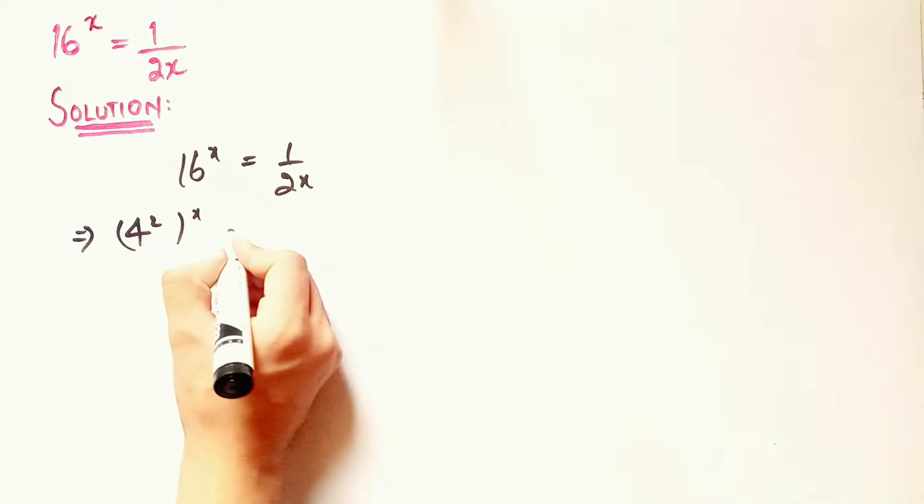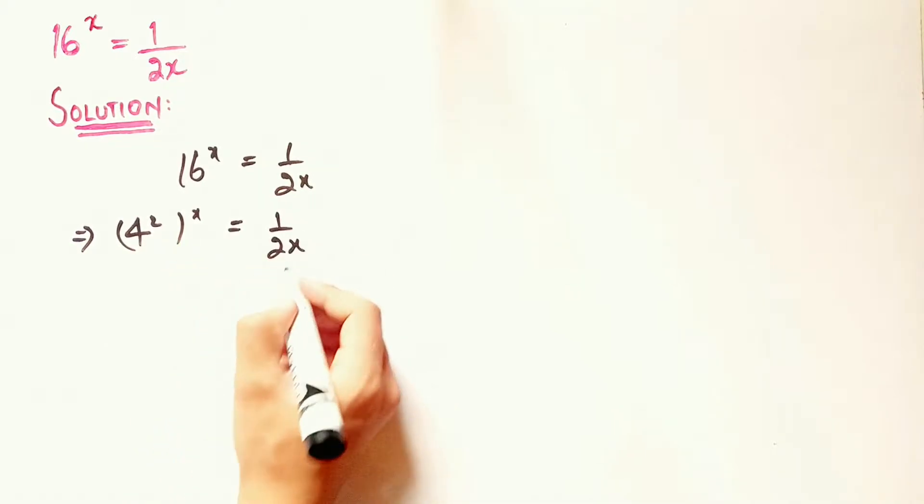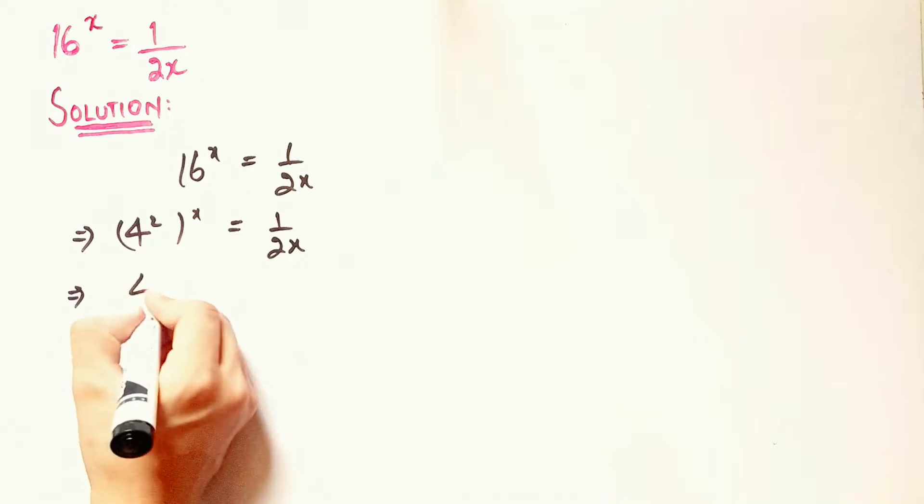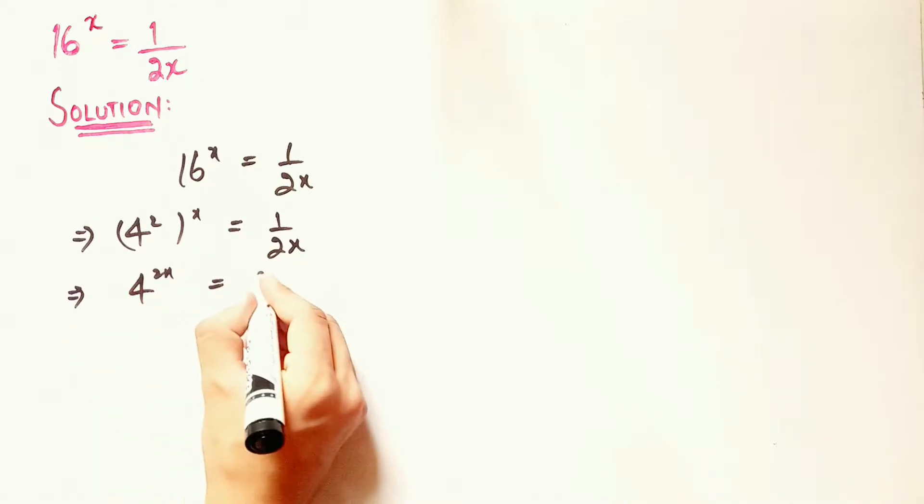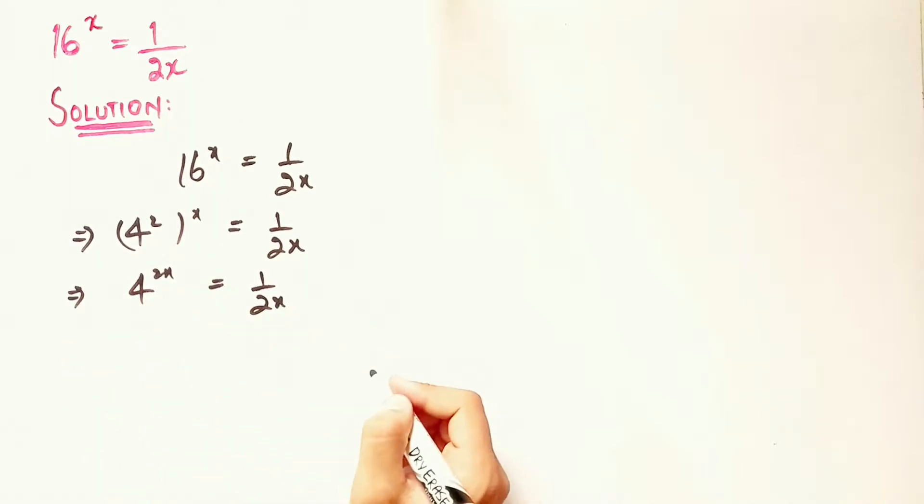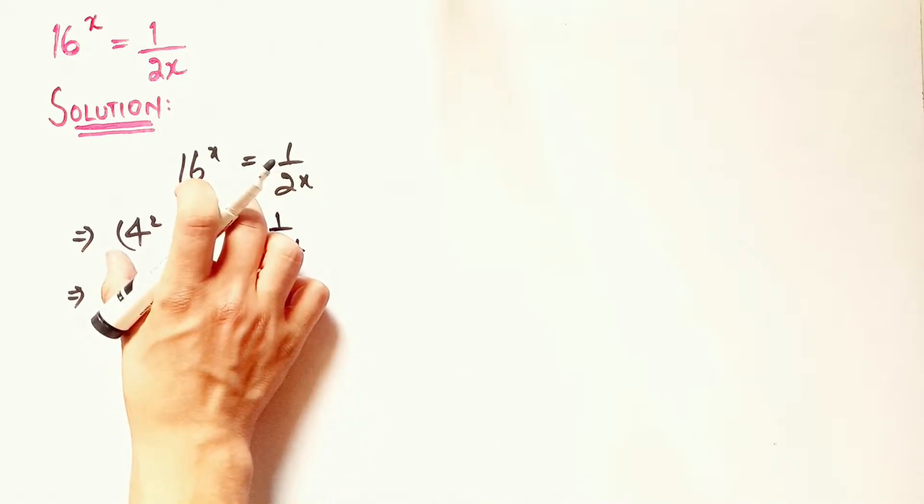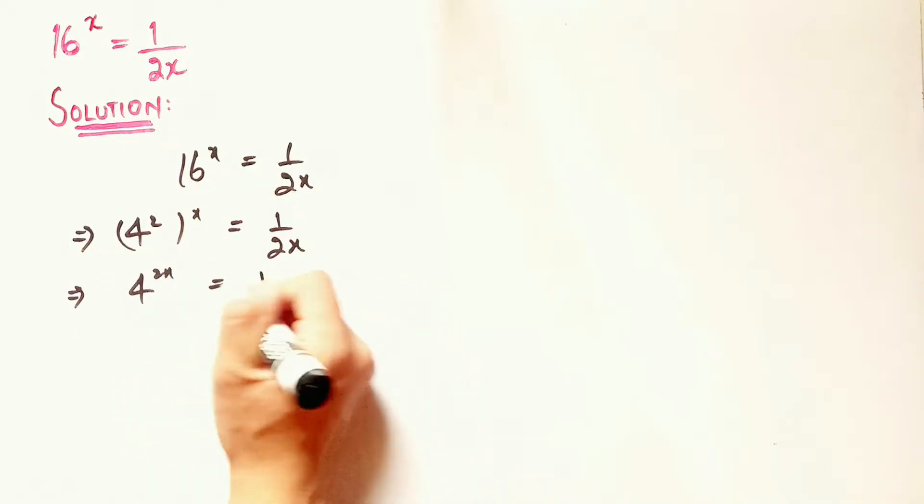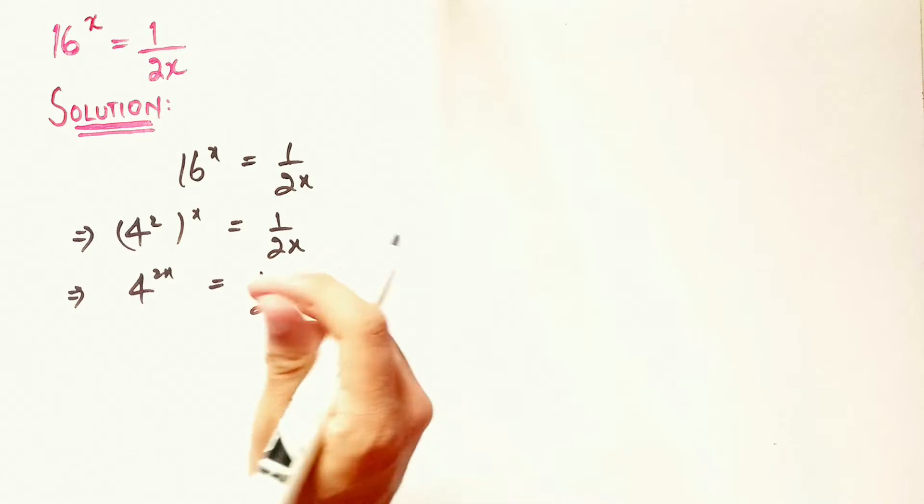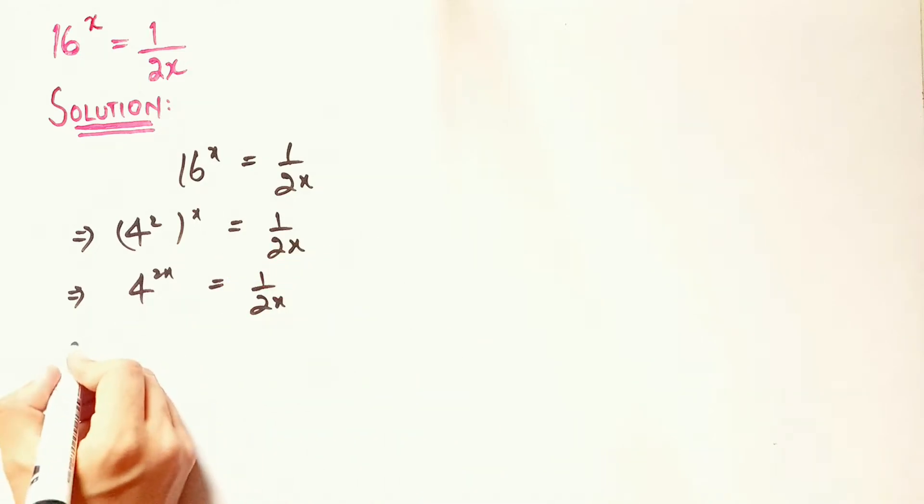So this equation becomes something like this, and now we can write it as 4 to the 2x equals 1 over 2x. I've done this because it will help us in simplifying this equation, and you will see it just in a moment.